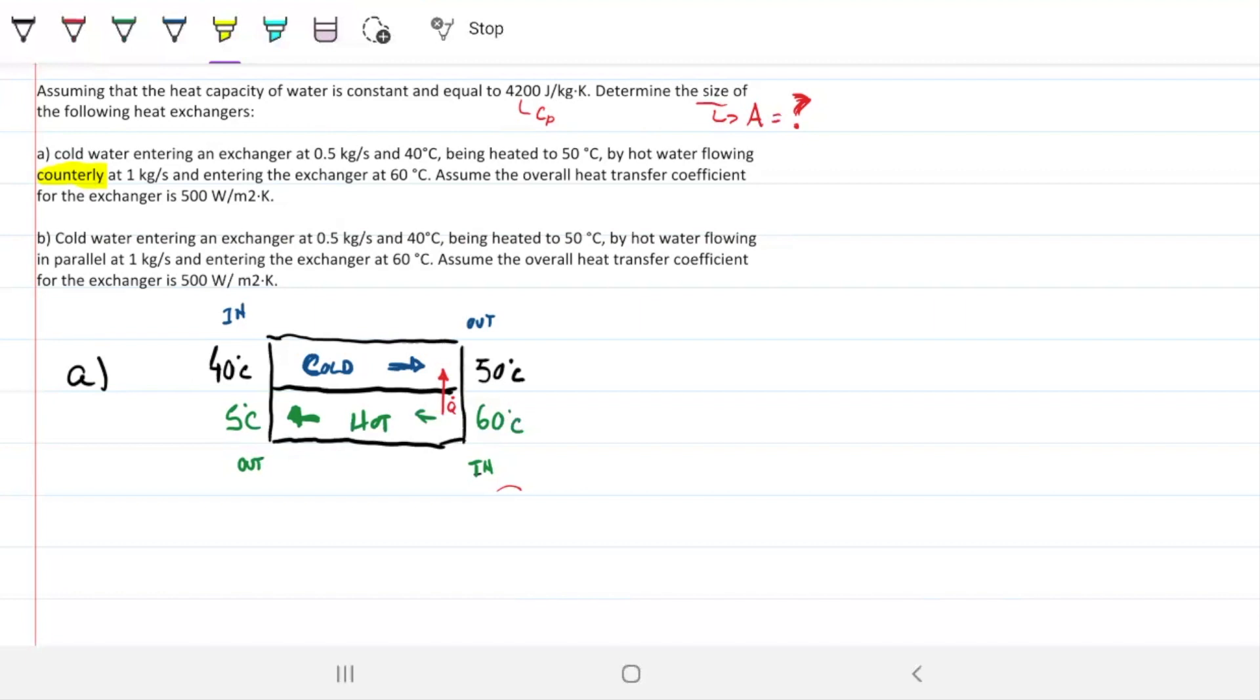Assume the overall heat transfer coefficient is 500. Is this 500 H or is it U? That's U. It's overall heat transfer coefficient, so that's why we can be sure it's U. I'm going to do this for every problem today for us to be extra sure of that.